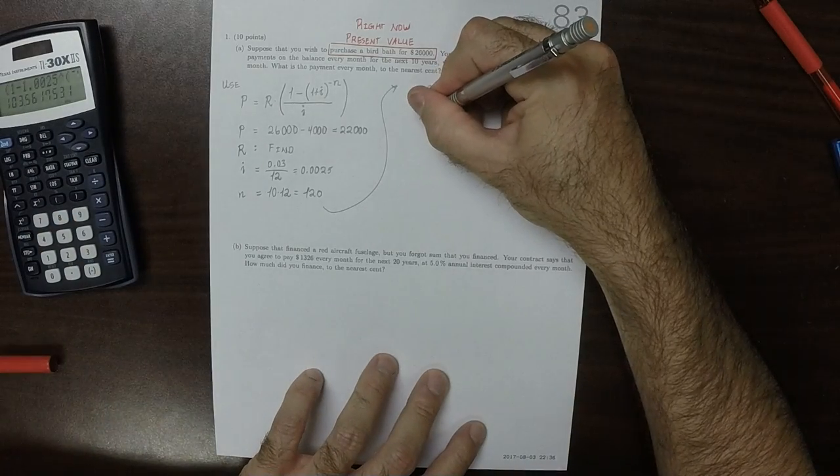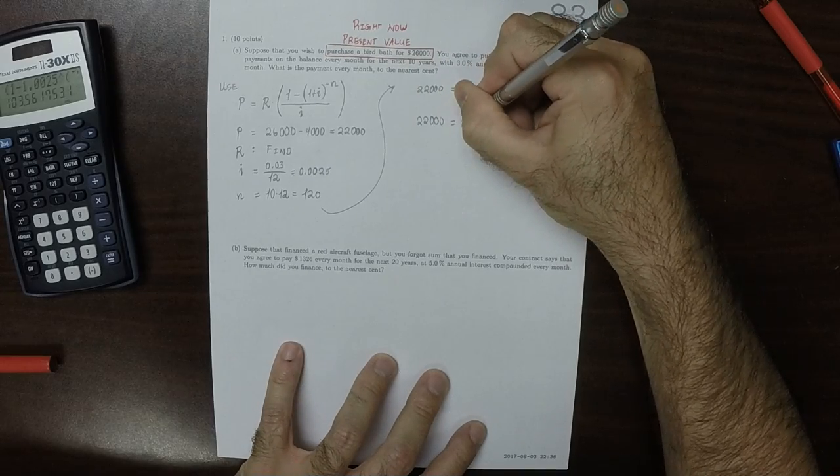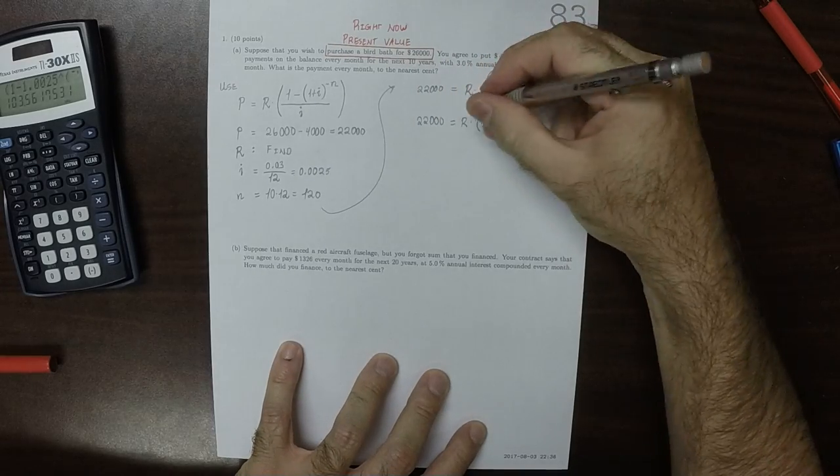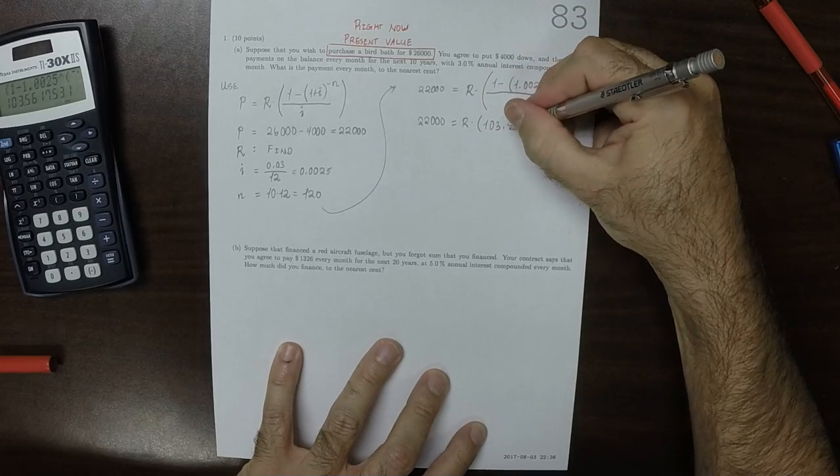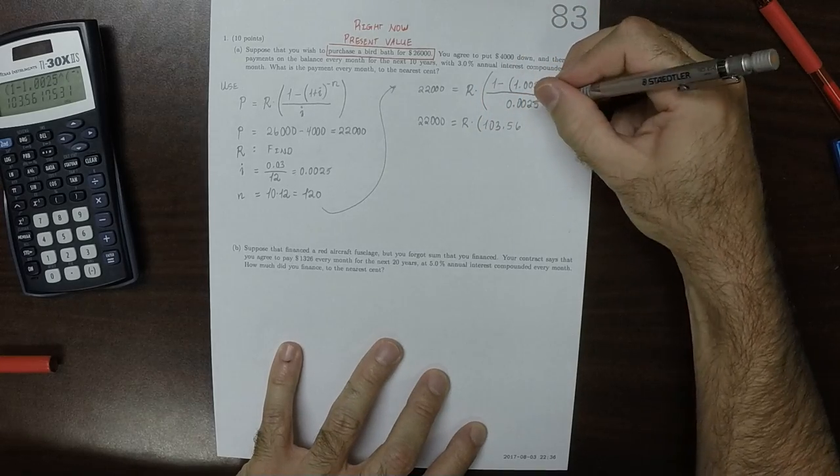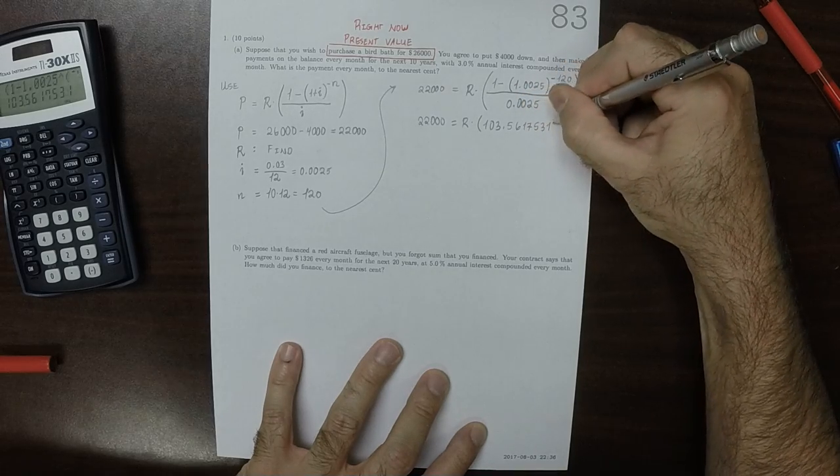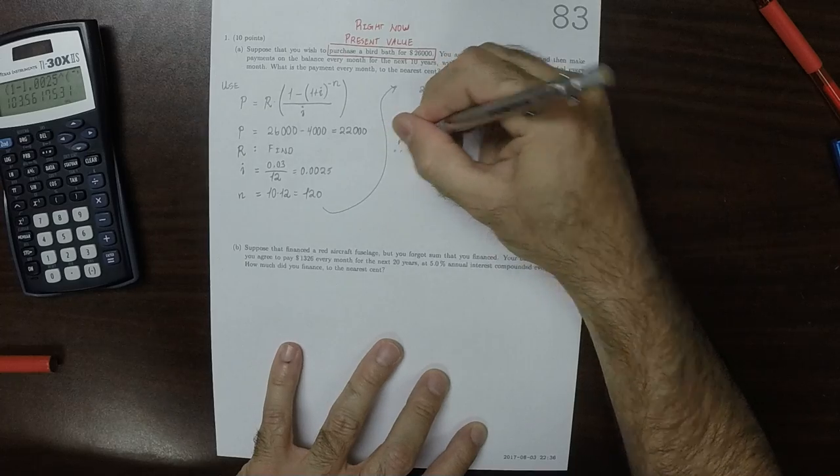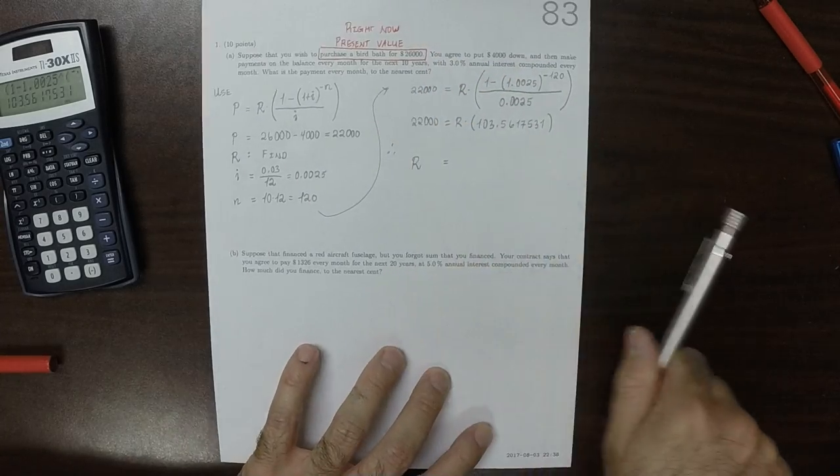So, 22,000 is R multiplied by 103.5617531. So, we can solve for R by dividing 22,000 by that number.